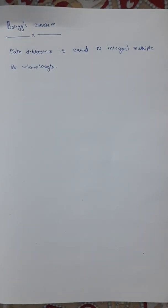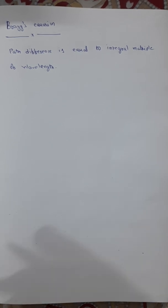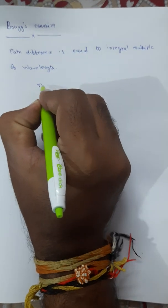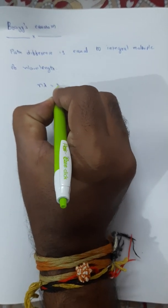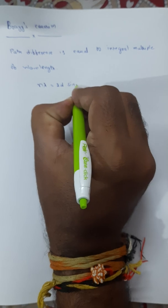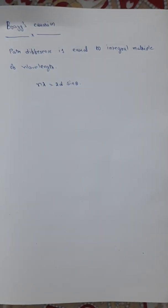Path difference is equal to integral multiple of wavelength. Bragg's equation can be written as n lambda equal to 2d sin theta. Let us try to derive the Bragg's equation.